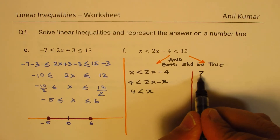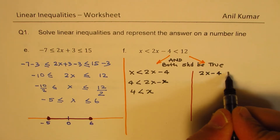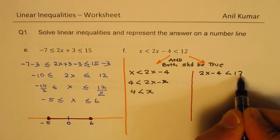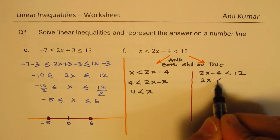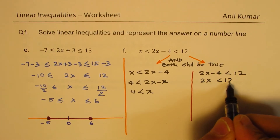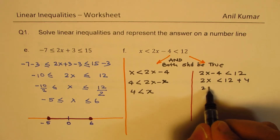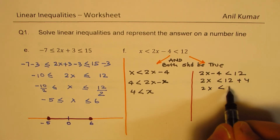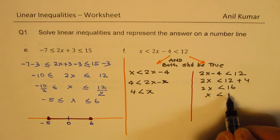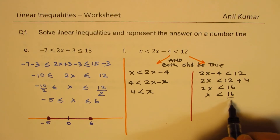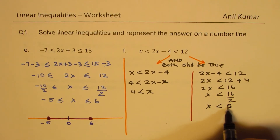On the other side, we have 2x minus 4 is less than 12. Bringing 4 across gives 2x less than 12 plus 4, so 2x is less than 16, meaning x is less than 8.